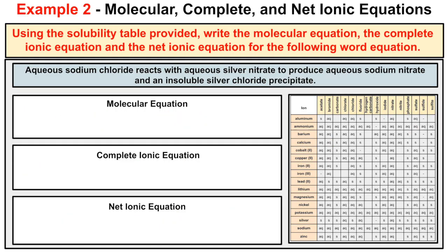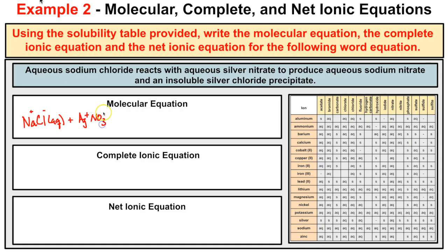In this last example, aqueous sodium chloride reacts with aqueous silver nitrate to produce aqueous sodium nitrate and an insoluble silver chloride precipitate. For the molecular equation: sodium chloride is NaCl — Na is +1, Cl is −1 — and it's aqueous. Silver nitrate is AgNO₃ — silver forms +1 ions, nitrate is −1 — and it's also aqueous. These react to produce aqueous sodium nitrate and insoluble silver chloride.